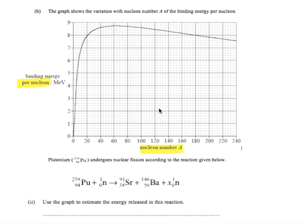We're given a fission equation involving plutonium-239, and it breaks up into strontium-91 and barium-146. We want to use the graph to estimate the energy released in this reaction.